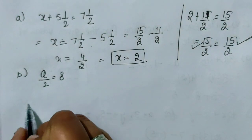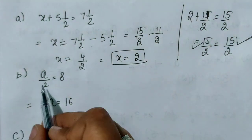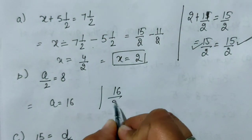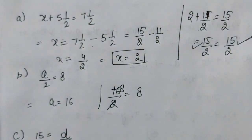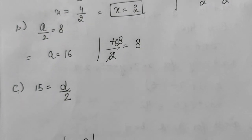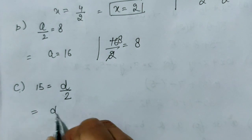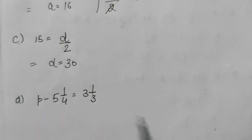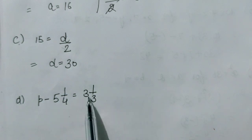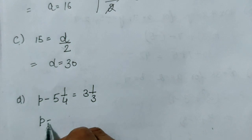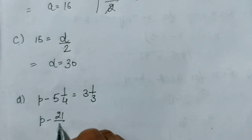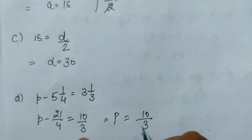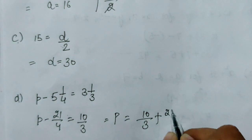Next question है a by 2 equal to 8। Cross multiply करने पर a की value आएगी 16। a की जगह 16 रखने पर 8 आता है, इसका मतलब answer सही है। Next: 15 equal to d by 2। Cross multiply करने पर d की value 30 आएगी, और दोनों sides equal आ जाएंगी। Next: p minus 5¼ equal to 3⅓। इनको improper fraction में convert करते हैं: 21 by 4 equal to 10 by 3।